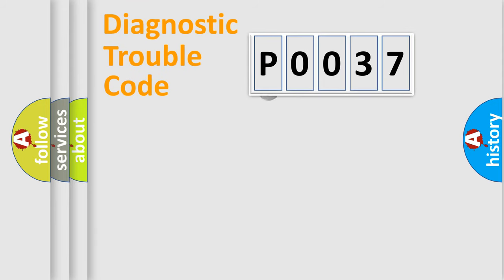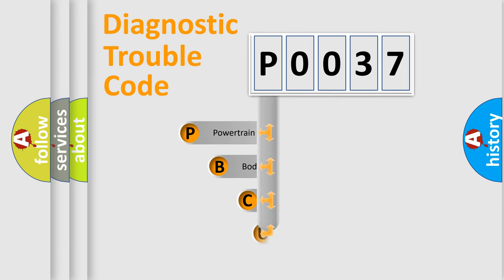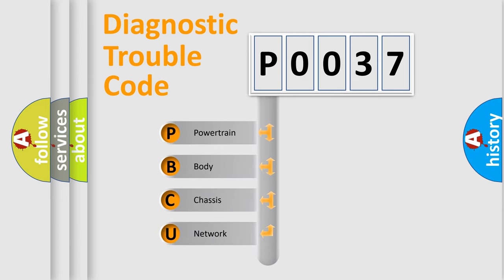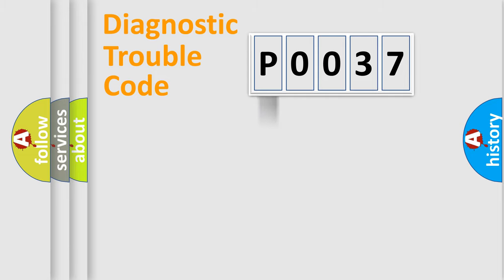First, let's look at the history of diagnostic fault code composition according to the OBD2 protocol, which is unified for all automakers since 2000. We divide the electric system of the automobile into four basic units: Powertrain, Body, Chassis, and Network. This distribution is defined in the first character of the code.